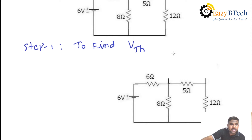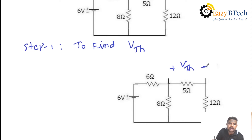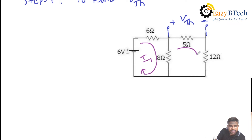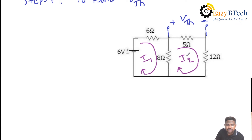At the deleted element, find out the open circuit voltage, that is, Vth across Rl. After deleting Rl, you can find out Vth across 5 ohms. Before finding the voltage across 5 ohms, you must find out what current is passing through 5 ohms. There are two loops in the given circuit after deleting Rl. Consider the loop currents I1 and I2, then find out I1 and I2, and after that find out Thevenin's voltage.